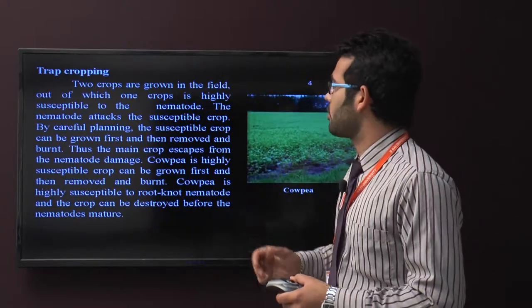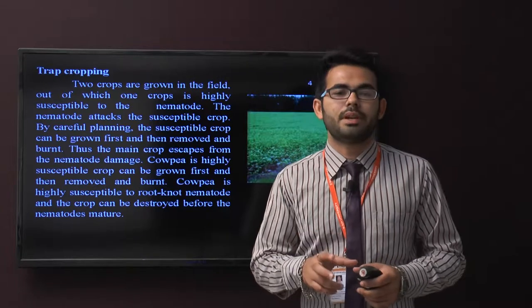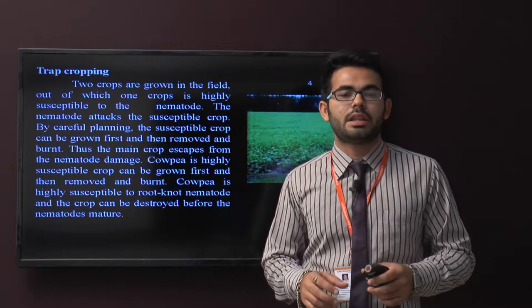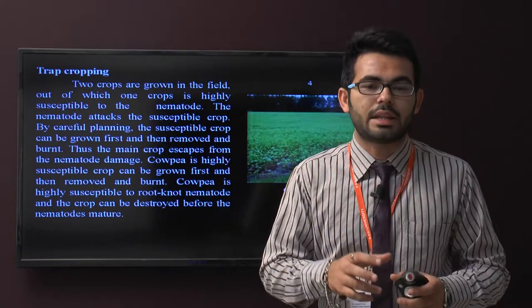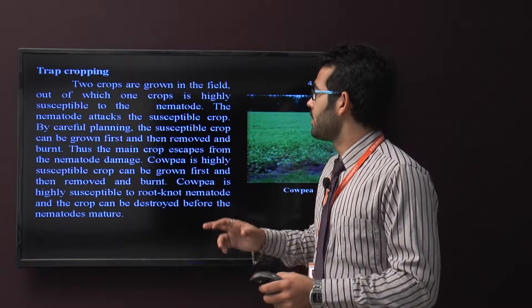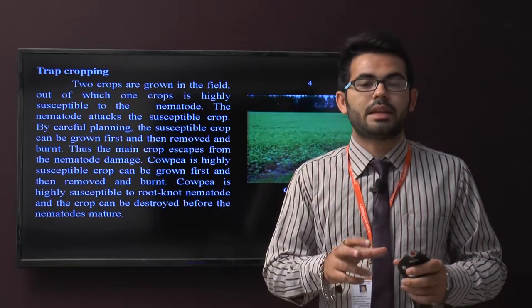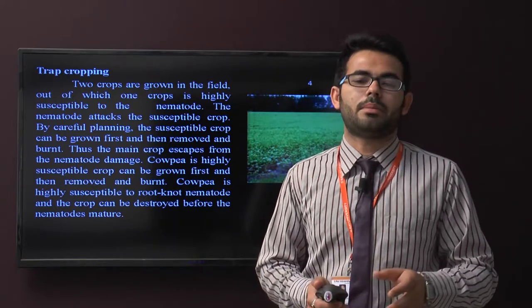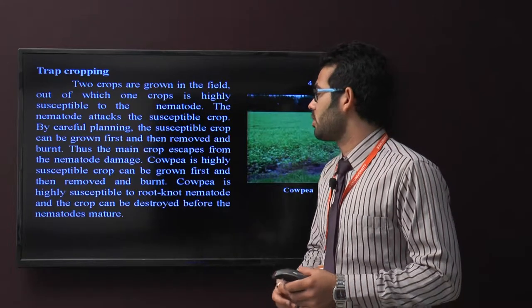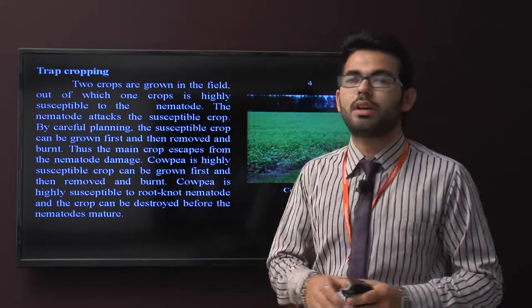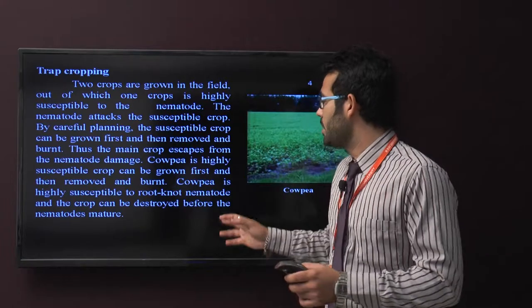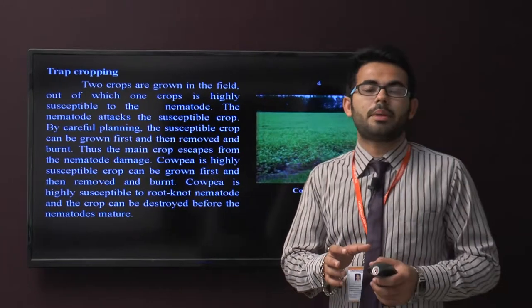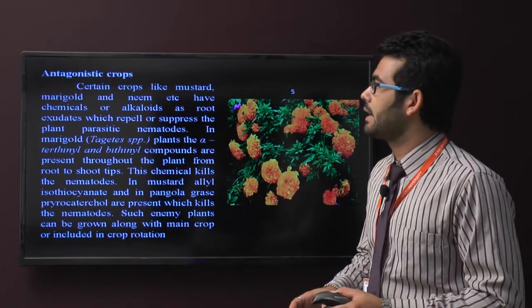Next one is trap cropping. Generally, two crops are grown in the same field. It is called trap cropping. Out of which one crop is highly susceptible to nematodes and the nematodes attack on the susceptible crop. Then by careful planting, the susceptible crop can be grown first and then removed and burned. Cowpea is highly susceptible to nematodes and the crop can be destroyed before the nematodes mature.